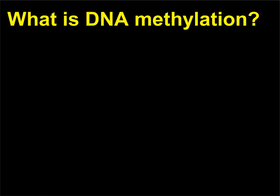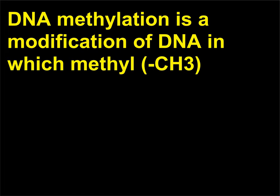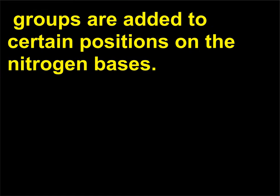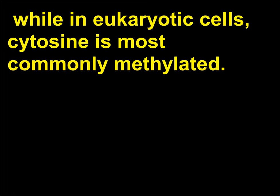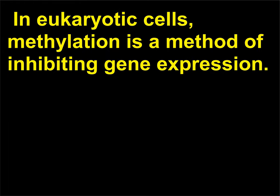What is DNA methylation? DNA methylation is a modification of DNA in which methyl groups are added to certain positions on the nitrogen bases. In bacteria, adenine and cytosine are commonly methylated, while in eukaryotic cells cytosine is most commonly methylated. In eukaryotic cells, methylation is a method of inhibiting gene expression.